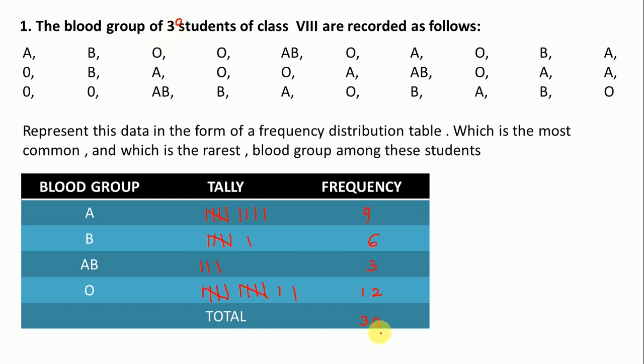And this one is 5 plus 5 plus 2, that is 12. Total of this is 30. So here is 30 students, our total is also 30. That means it is correct. Then the next one is the most common blood group. The most common blood group whose frequency is more, that one is the common blood group.